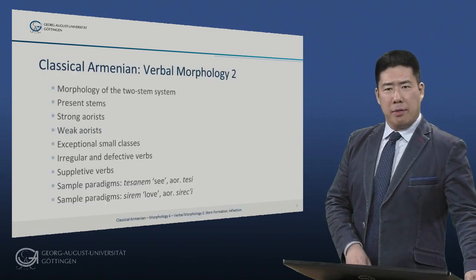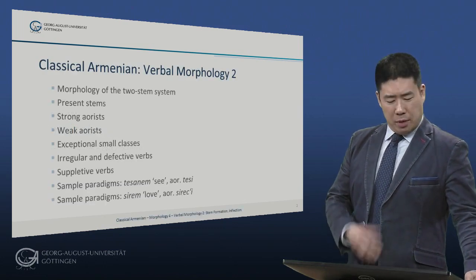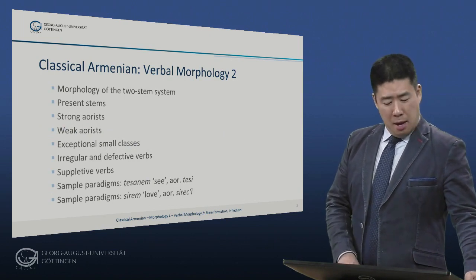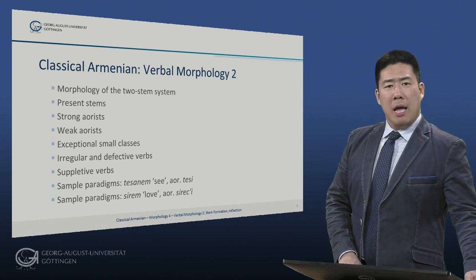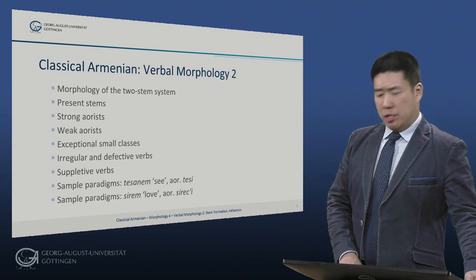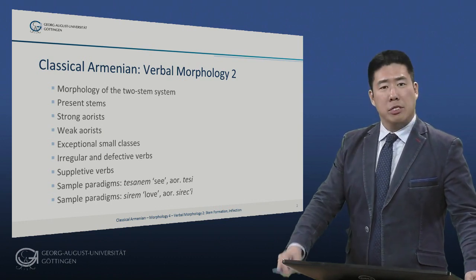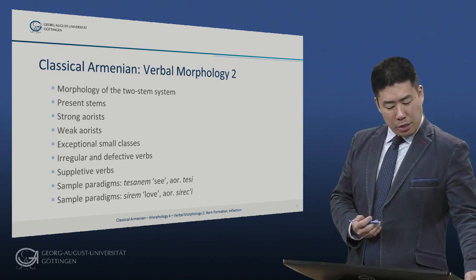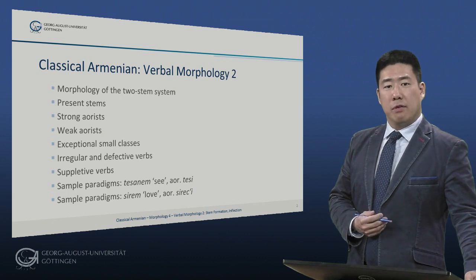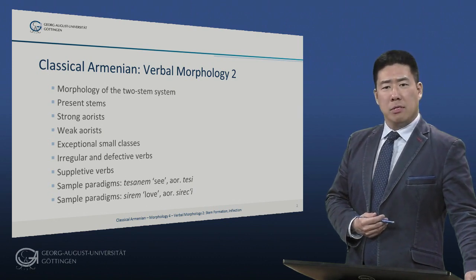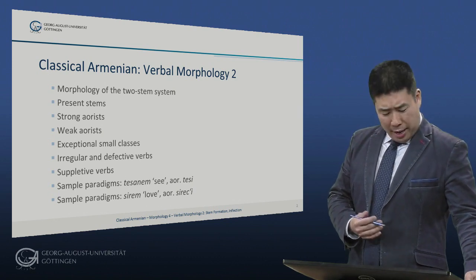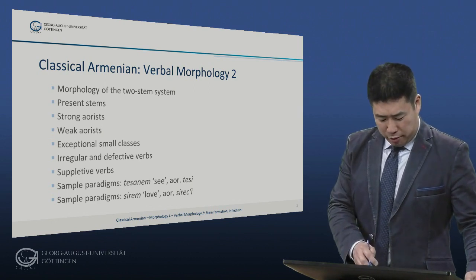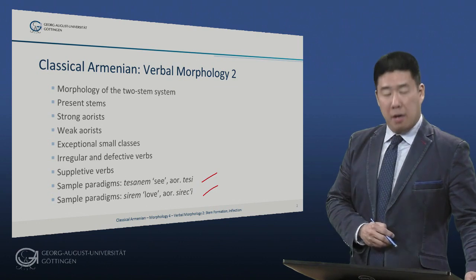Here's the roadmap for this video. We'll begin by talking about the morphology of the two-stem system, look at present stems, and then at two types of aorist stems: so-called strong aorists and weak aorists. We will then look at some exceptional small classes, irregular and defective verbs, and suppletive verbs. We will conclude by examining some sample paradigms of two typical verbs, the verb 'see' and the verb 'love'.